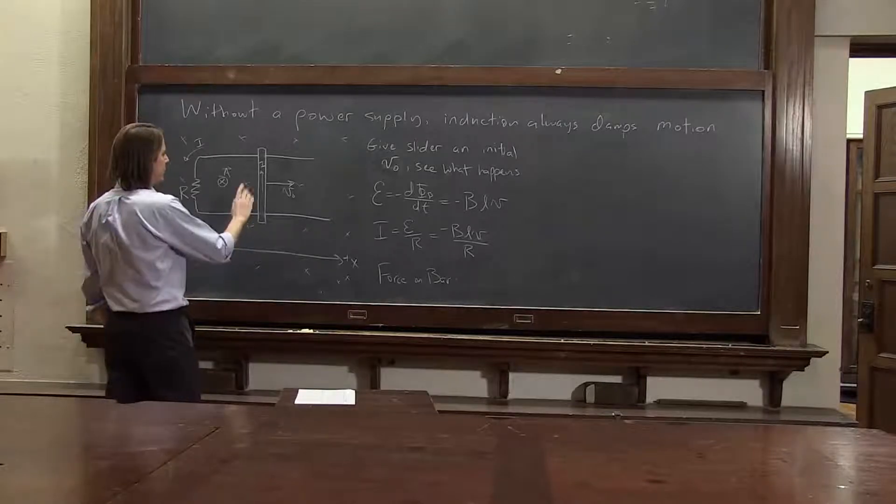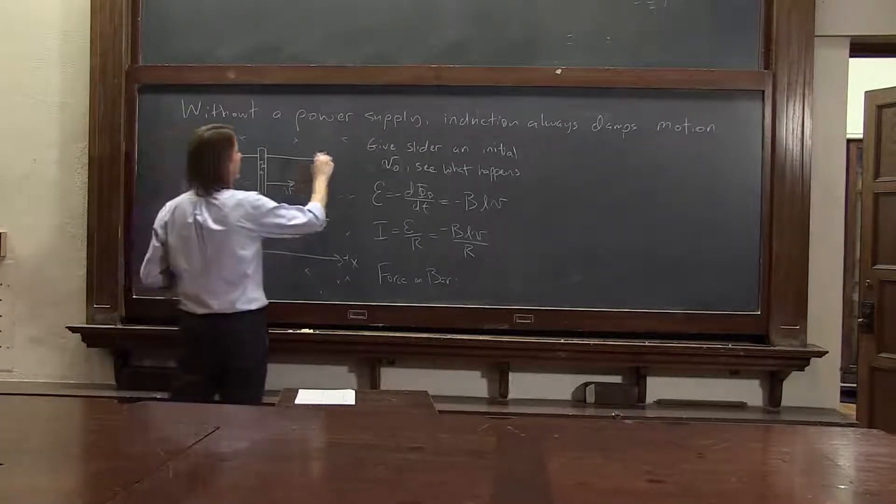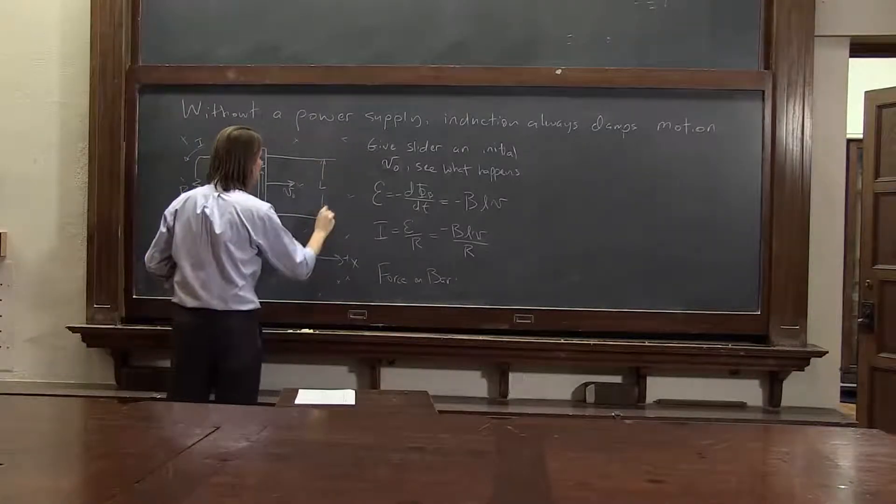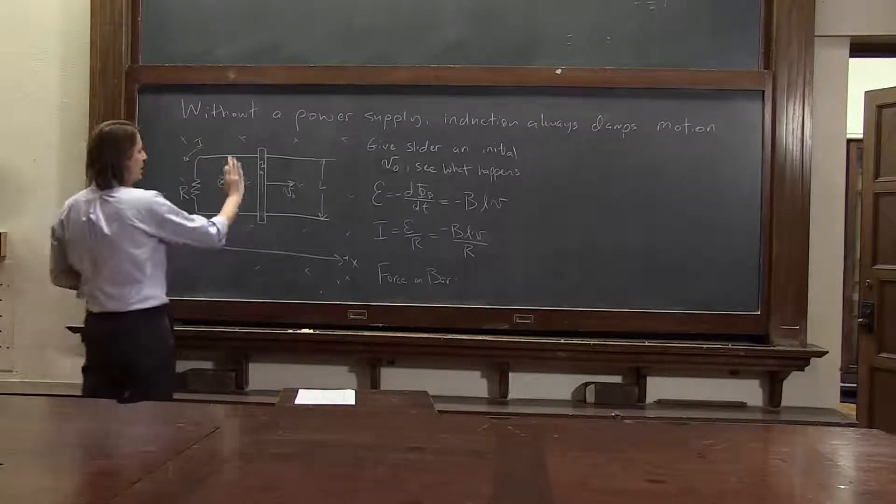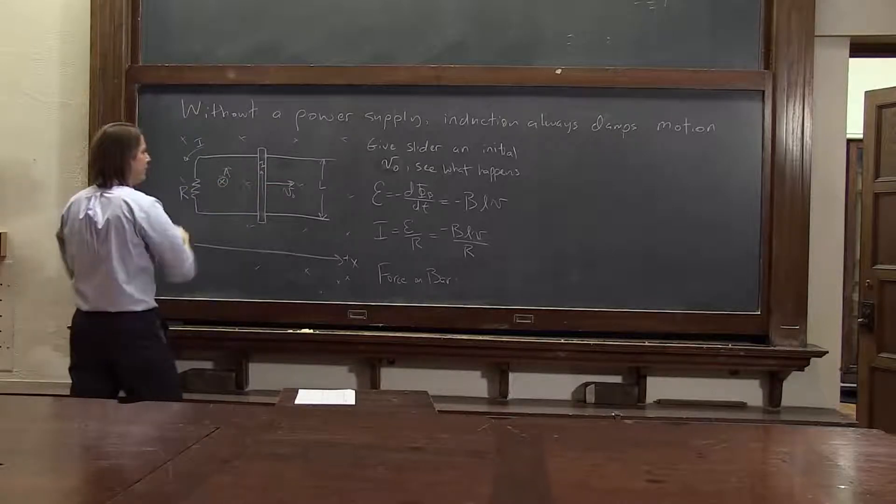So I is this way. L is also this way. If L is the length of the slider, so we can point out that this is L, just like it was a little l before. Now it's a big L, grew up. It's going to be I, L is this way, cross b is that way. It's going to feel a force this way.